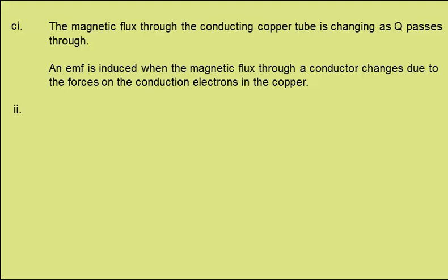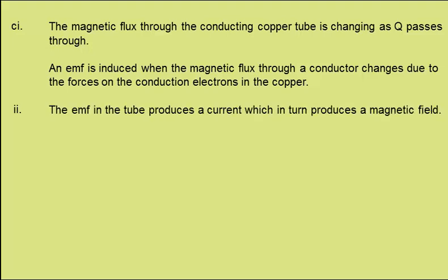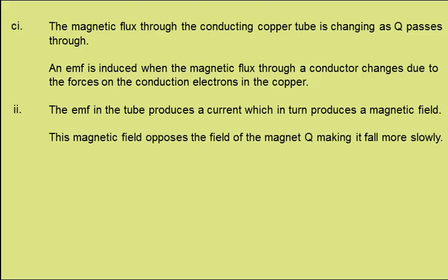In part 2, we're to state the consequences of this induced EMF and explain why Q takes longer than P to pass through the tube. Well, the EMF in the tube will produce a current, which in turn produces a magnetic field. This magnetic field opposes the field of the magnet Q. This makes it fall more slowly. P produces no EMF as it is not magnetized, so it will fall as normal.